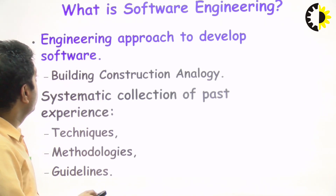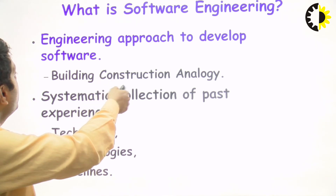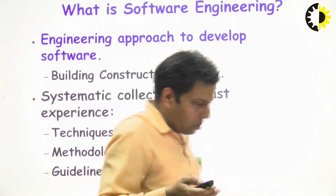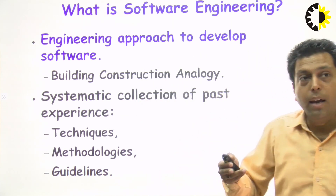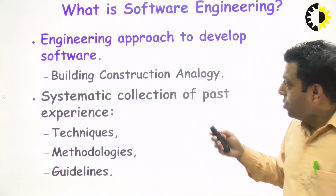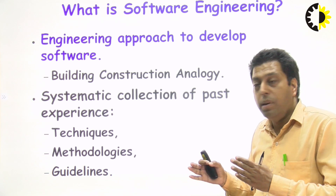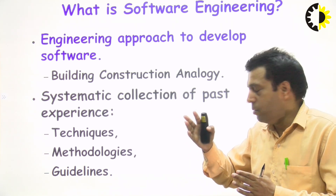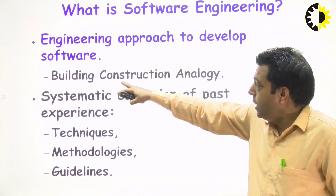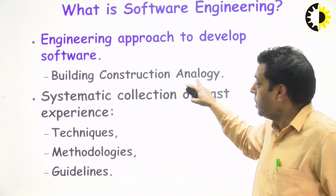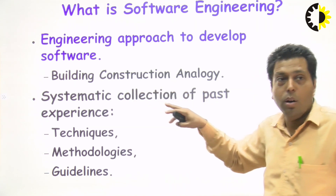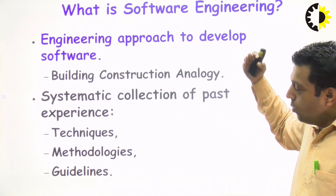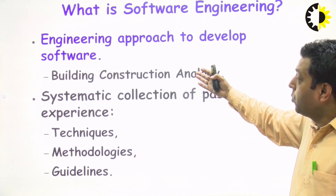Software engineering is basically an engineering approach to developing software — how we are likely to build up a software. An example analogous to software engineering is building construction or township development, similar to how a big building is constructed. This is how we arrived at this particular approach.